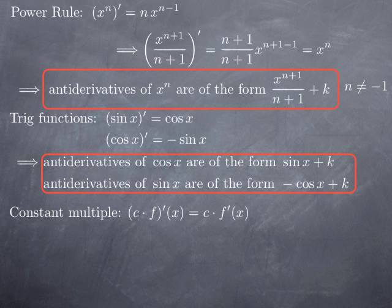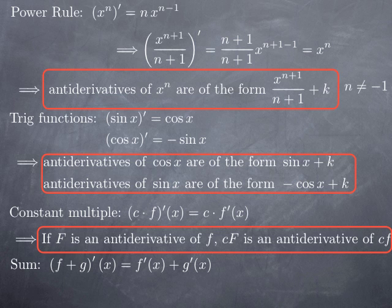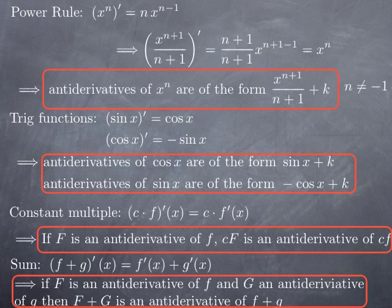Among the standard formulas for derivatives, we have the constant multiple rule: if I multiply a function by a constant and differentiate, I obtain the derivative of the function multiplied by the constant. Turning that around, if capital F is an antiderivative of f, then c times capital F is an antiderivative of c times f, since differentiating c·F gives c·f. Similarly, the derivative of a sum is the sum of the derivatives — therefore, if capital F is an antiderivative of f and capital G is an antiderivative of g, then F plus G is an antiderivative of f plus g.